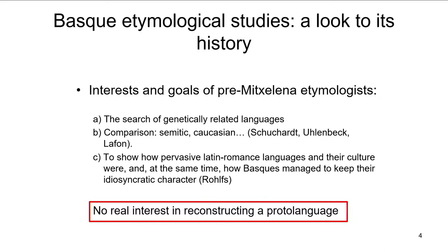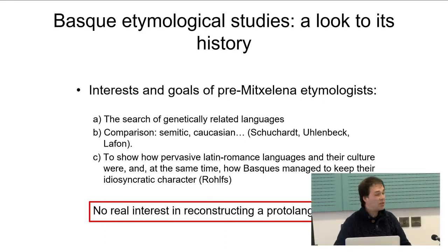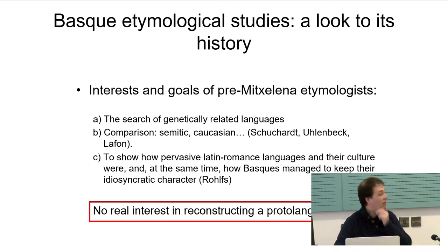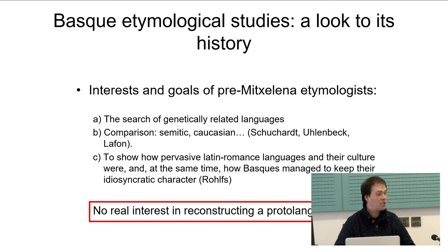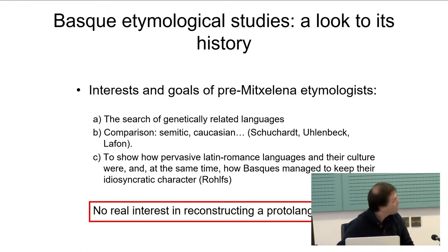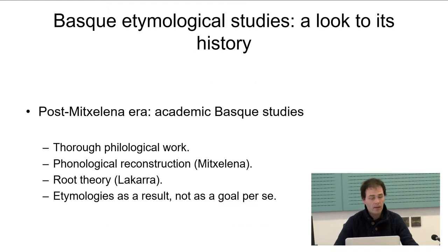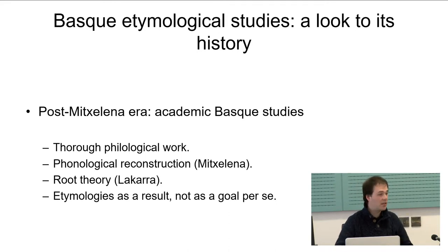The interests and goals of pre-Michelena etymology were the following: they were looking for genetically related languages, for instance comparing Basque to Caucasian in all those theories. In the case of Romanists like Rolfs, they would try to analyze to what extent the original Basque culture was affected by Latino-Romance languages and culture. As you can see, there was no real interest in reconstructing a proto-language.